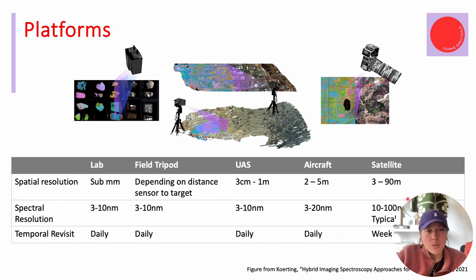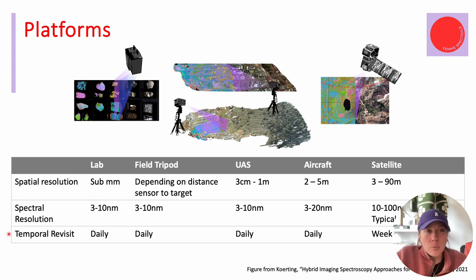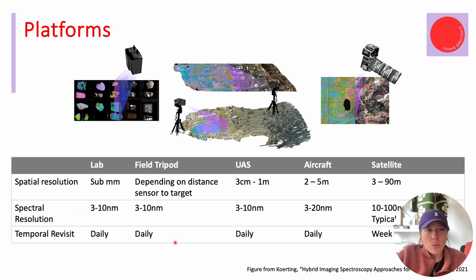Satellites tend to have wider bandpass and wider spectral channels, so lower spectral resolution. For temporal revisit time, satellites now offer weekly or daily coverage. Aircraft depends on campaign scheduling, and UAS depends on how often you can fly and whether atmospheric and sun conditions are favorable. In the lab, you can scan as often as you want because you control conditions and illumination.